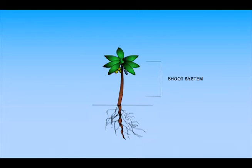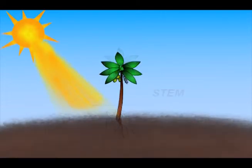Main axis of the shoot system is called the stem. It grows above the soil, towards the sunlight.